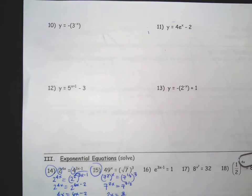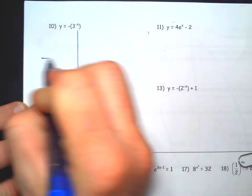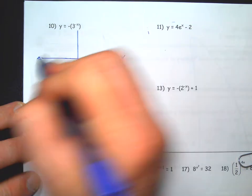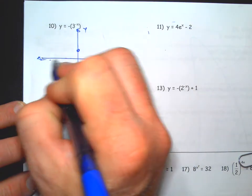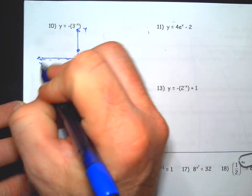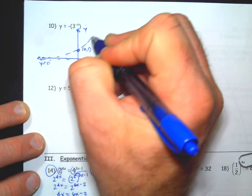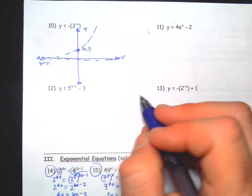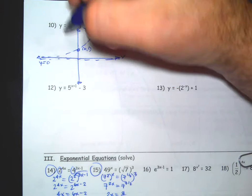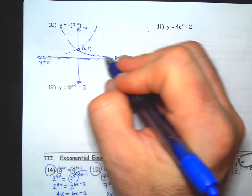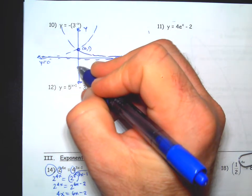Let's see. Parent function, horizontal asymptote y equals zero labeled, y-intercept labeled. That's y equals three to the x. The negative on the inside flips it left to right. Negative on the outside flips it up to down.